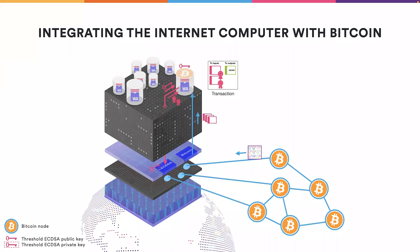The canister then makes a request to the Bitcoin system API to send the transaction out to the Bitcoin network. This is done very quickly, with each replica sending the transaction to every connected node, so the transaction gets rapidly disseminated throughout the whole Bitcoin network. This concludes the high-level overview of the integration with the Bitcoin network for the Internet Computer.